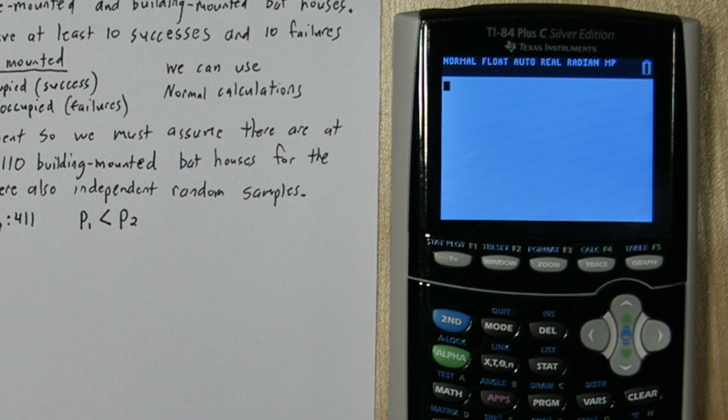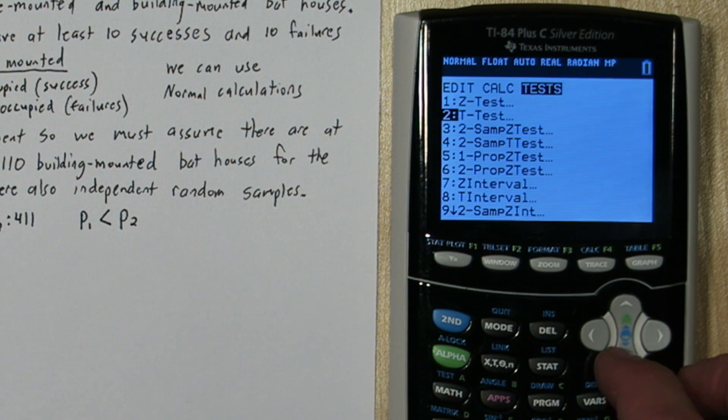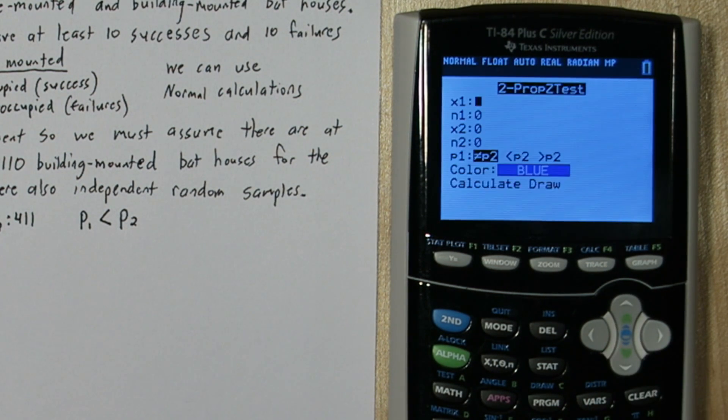We're going to do the DO step on the calculator. So press the STAT button, and go over to Test. Go down to 2PropZTest. X1 is the number of tree-mounted bat houses that were occupied, so 25. And N1 is the total number of tree-mounted bat houses in our sample, 125.